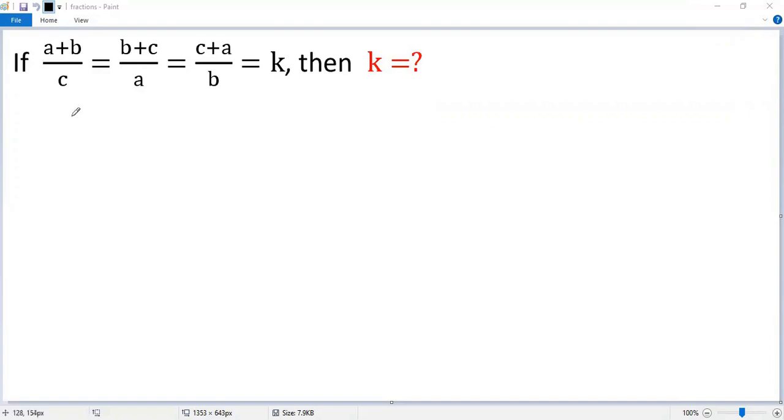To find the value of k, let's equate the first fraction to k. So we get a plus b over c equals k. Both sides multiplied by c, we get a plus b equals c times k.